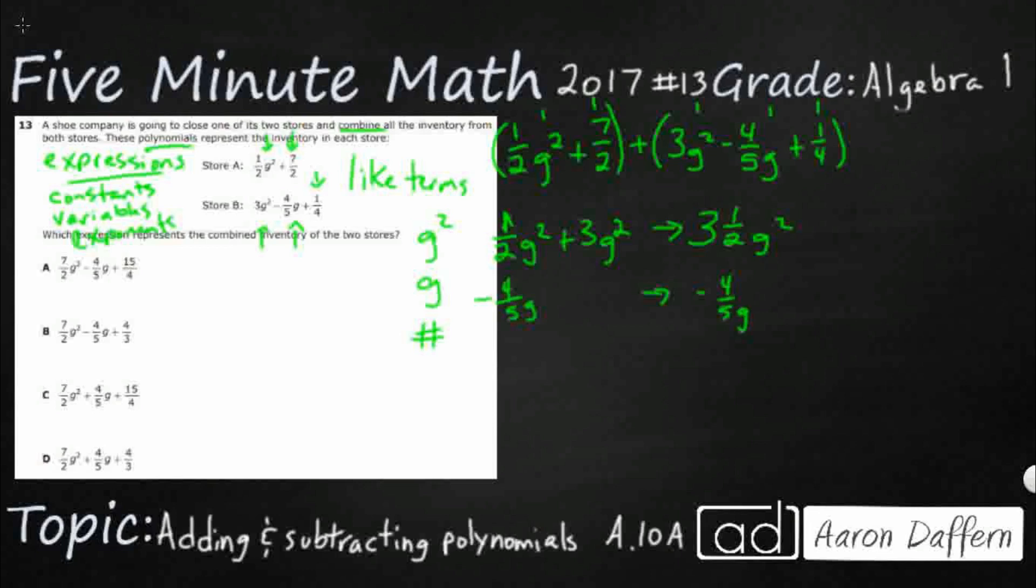And then I've got constants. 7 halves. Plus 1 fourth. I've got that 7 halves. I've got that 1 fourth.